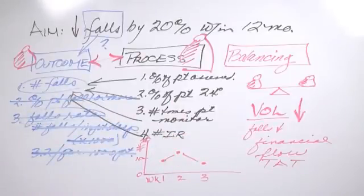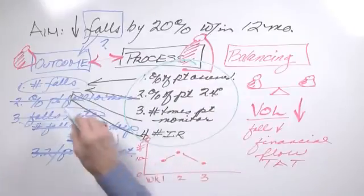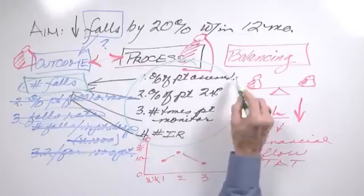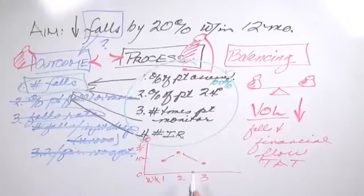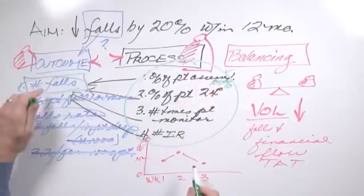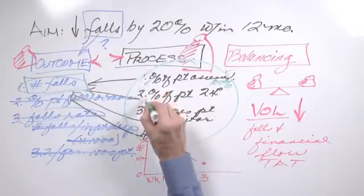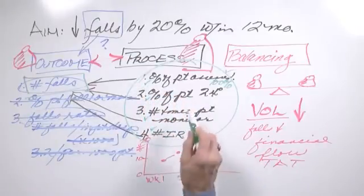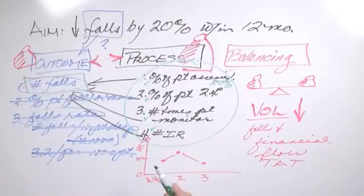Final thing is you've got to be aware of the fact that the process measures are going to change much more quickly and in a shorter period of time than your outcome. So you may be working on falls assessments and get 100% of all patients reviewed and assessed, but falls aren't declining because assessment alone is not enough to drive the outcome measure. Outcomes change more slowly than process measures.